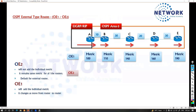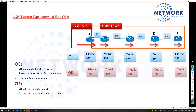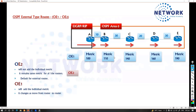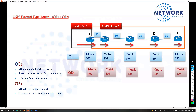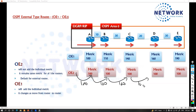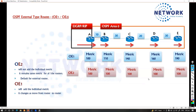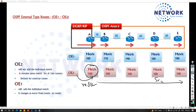With E2 — the default — if you give a metric of 100 at redistribution time, the metric remains 100 all the way through every router. It doesn't change. So whatever metric you define at redistribution time, it stays the same regardless of how many routers the route crosses. E2 is the default, but most of the time you do not want this behavior.